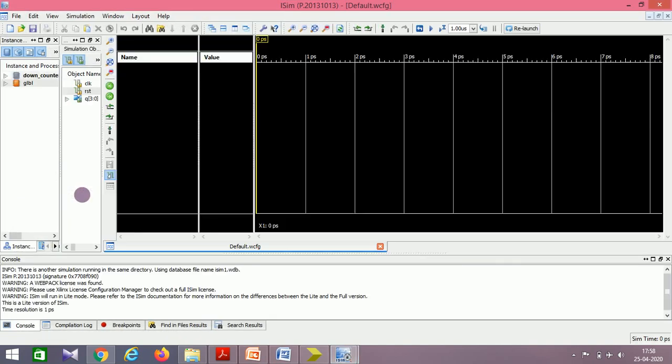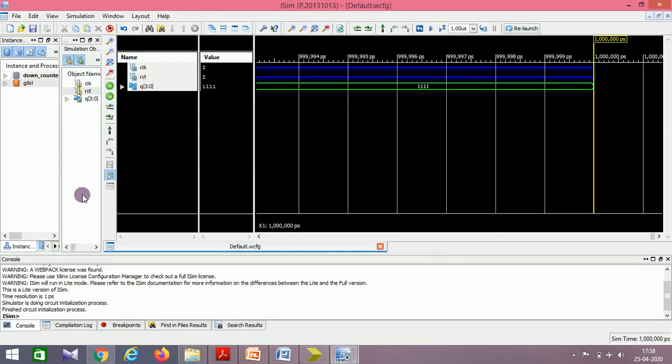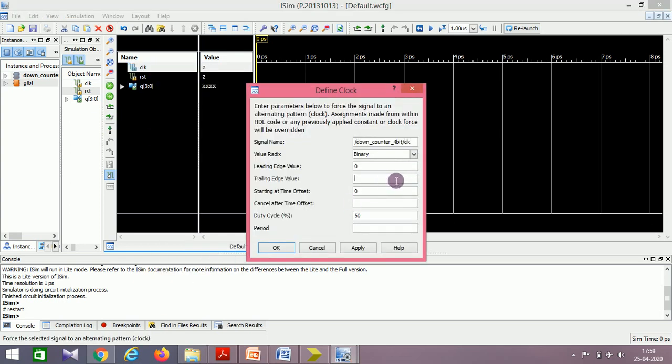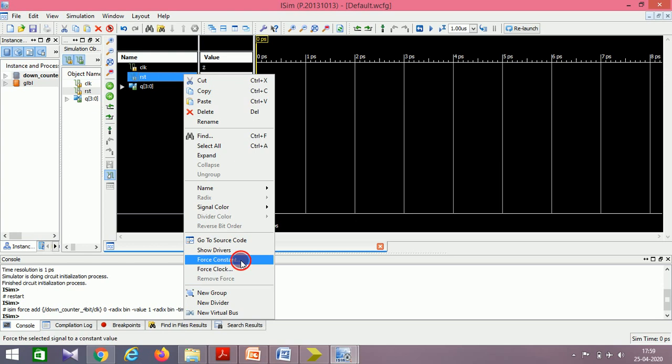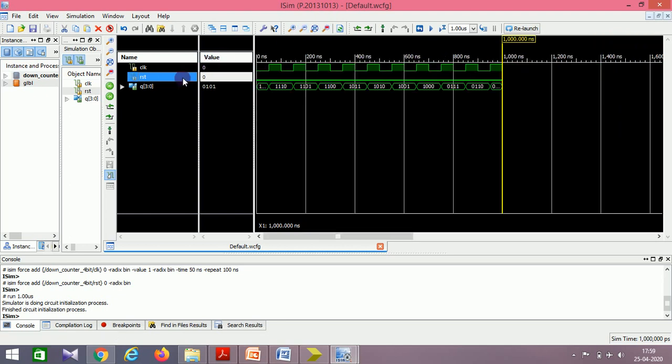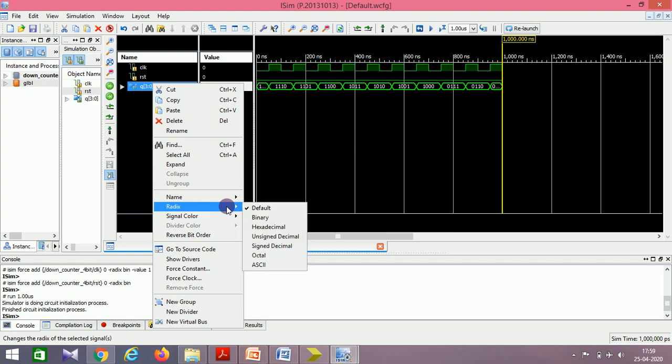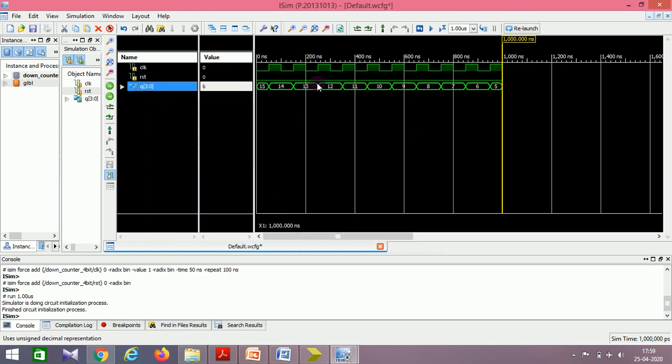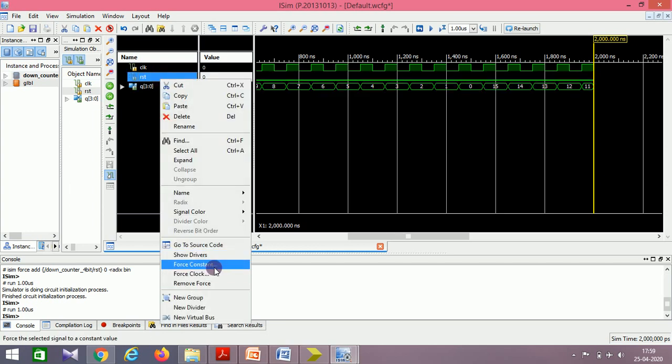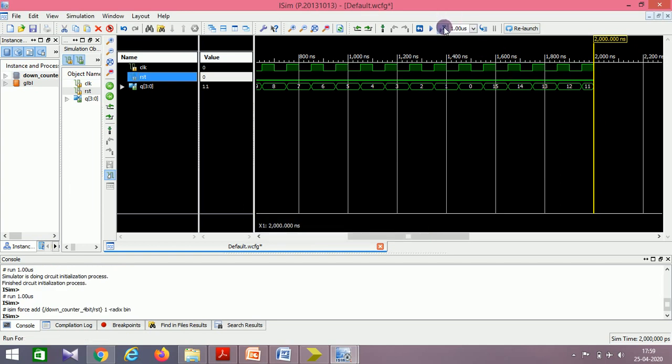In the down counter, Q reaches the minimum value 0000. When you subtract one from it, it rolls back to the highest value. That's the change. I'll show it: clock zero one, 100 nanoseconds. I give reset to zero itself so I start the counter immediately. I change it to unsigned decimal. So 15, 14, 13, it goes on continuing. Once it reaches zero, if you try to decrement it, it will reach to 15. This is what happens in the down counter. As soon as I make reset equal to one, your Q takes the value 15.